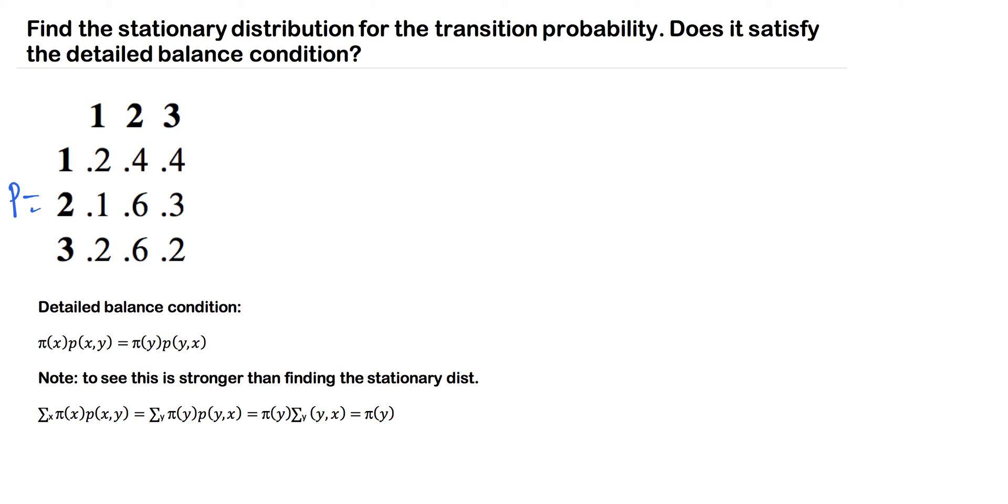So if you've watched those videos or from class, you remember that what we're trying to find is some kind of probability vector we'll name π times P equals itself. This is to find the stationary distribution here.